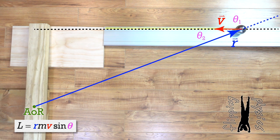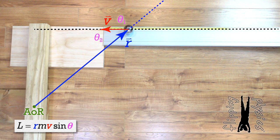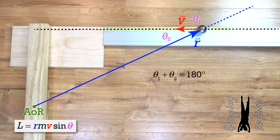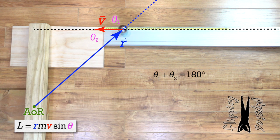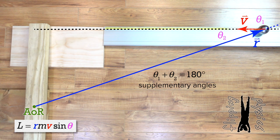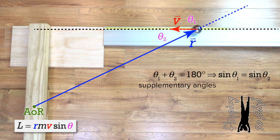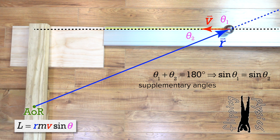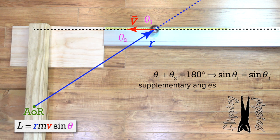That is correct Bobby, but notice that theta 1 and theta 2 are supplementary angles. Oh, right. Theta 1 and theta 2 add up to 180 degrees, so they are supplementary angles. So, the sine of theta 1 equals the sine of theta 2, so it does not really matter which angle we use as far as the angular momentum of the point particle is concerned, right Mr. P? Sure Billy, that's fine.